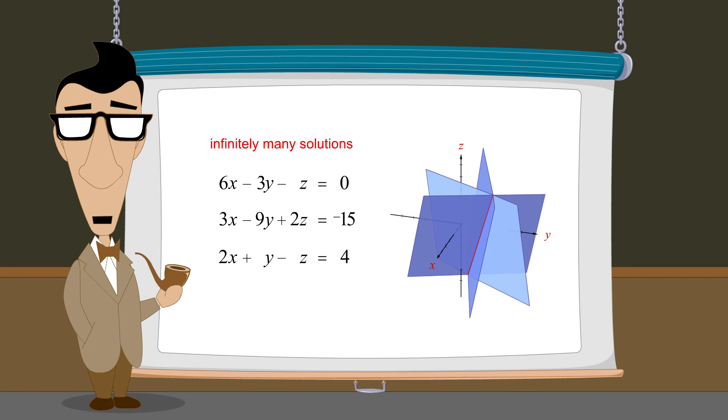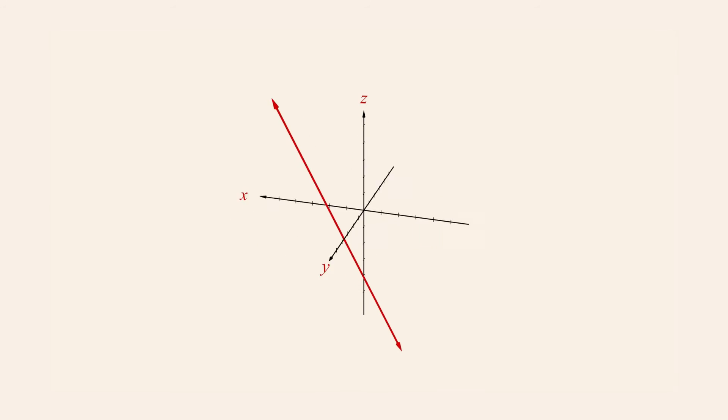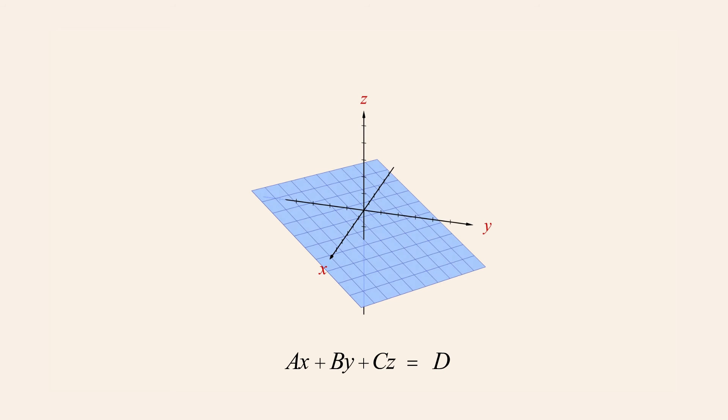We need some other way to describe a solution set whose graph is a line in three-dimensional space. Since a line in three dimensions is a linear object, you might think that it could be described by a linear equation in x, y, and z. But as we have seen, linear equations in three variables describe planes, not lines.